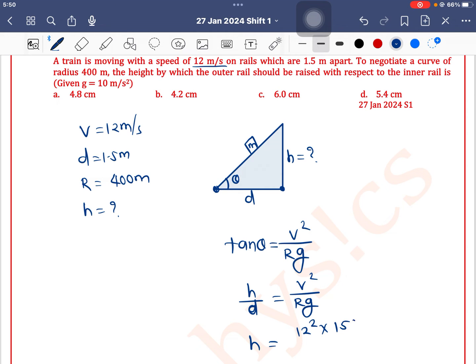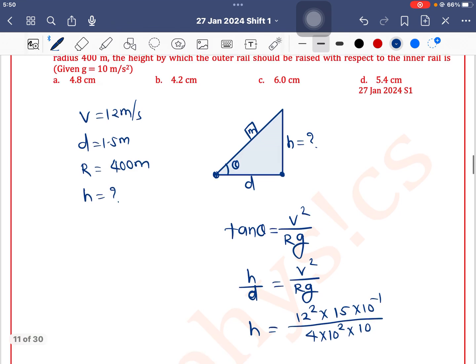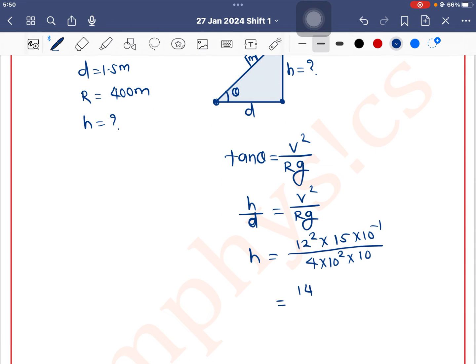d is 1.5, which is 15 times 10 to the power minus 1, divided by R which is 400, or 4 times 10 to the power 2, times g which is 10. So 12 squared is 144 times 15 divided by 4, and 10 to the power 2 plus 1 is 3.